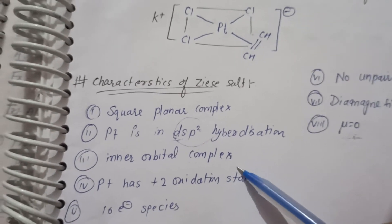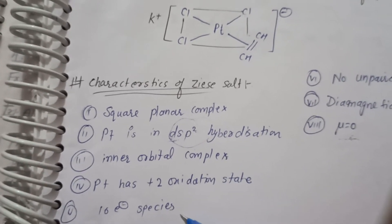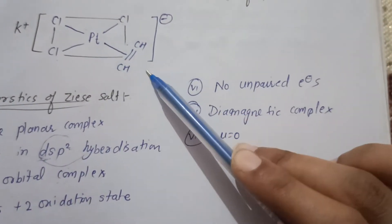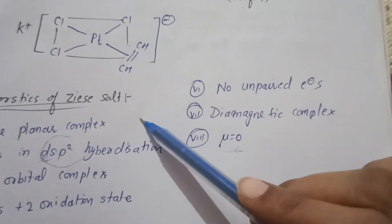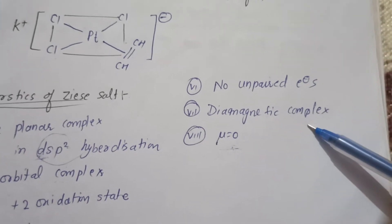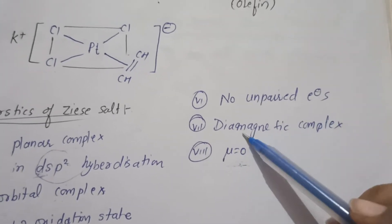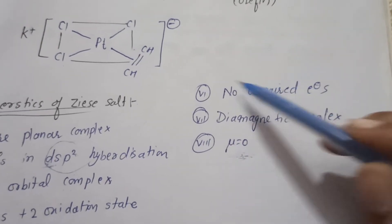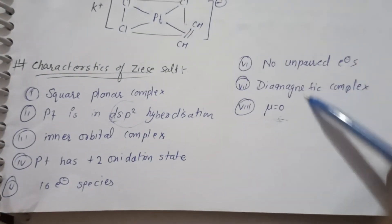Next we have 16 electron species. Next we have no unpaired electron which is diamagnetic complex. What is the magnetic moment? Zero. So all these characteristics are related to each other.